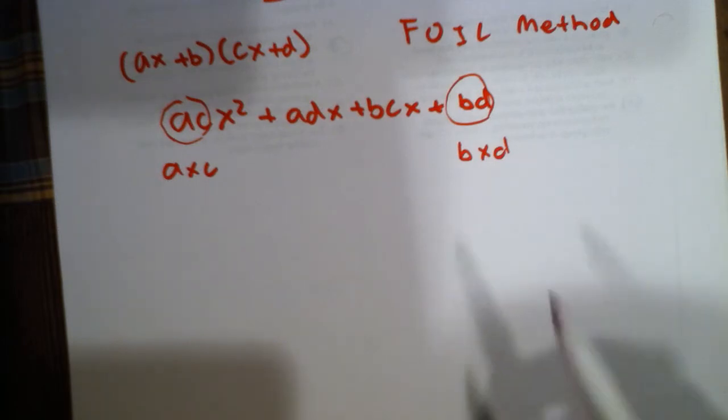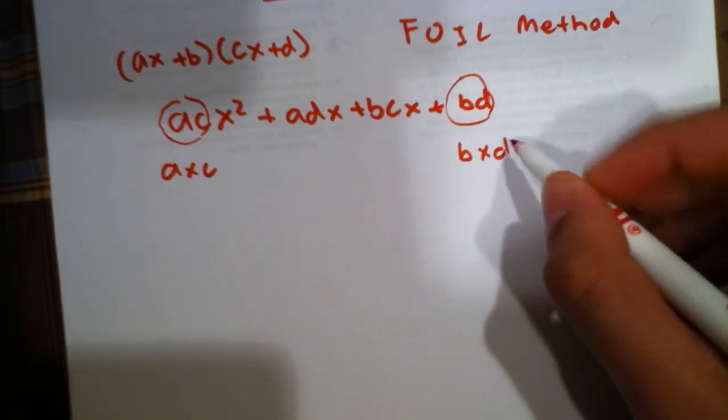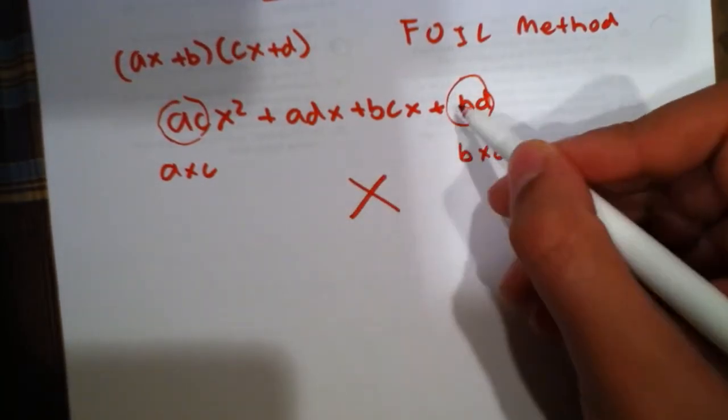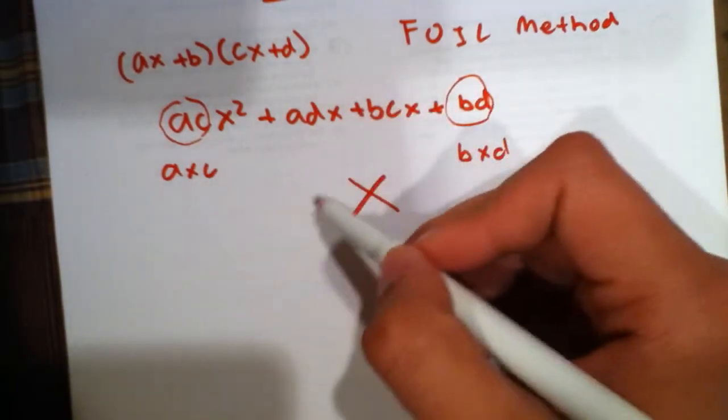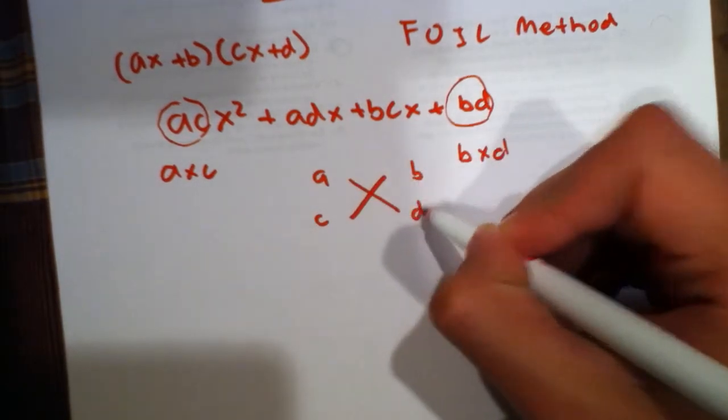Let me show you an example using this. If we make a cross here and this side represents this term and this side represents this term, we have a times c on this side and b times d on this side.